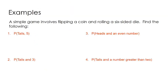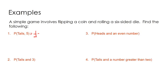A simple game involves flipping a coin and rolling a six-sided die. What's the probability of getting tails on the coin flip and a five when you roll the die? These are independent events — obviously the coin flip in no way affects the die roll. Your first event is one half. Your second event is one sixth, and you multiply those. There is a one in twelve chance that you get tails on the coin flip and a five on the die roll.